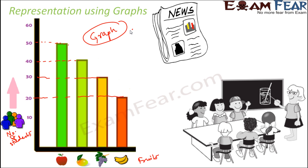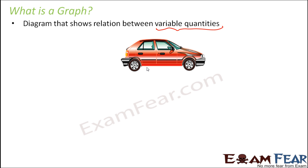So graphs are something which are very commonly seen in the newspapers as well. So if you want, you can actually scan through your newspapers and see where you can get a graph. Now, the question is, what is a graph? So it is a diagram that shows relation between variable quantities. Now, what are variable quantities? That is, quantities which do not remain constant. That is, they keep changing their values. So in the previous example, I took the example of the number of students and fruits.